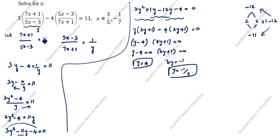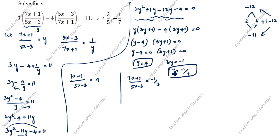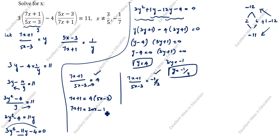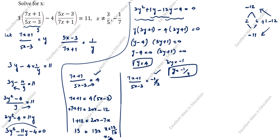Substituting y = 4: (7x + 1)/(5x - 3) = 4. Cross-multiplying: 7x + 1 = 4(5x - 3) = 20x - 12. Rearranging: 1 + 12 = 20x - 7x, so 13 = 13x, giving x = 1.